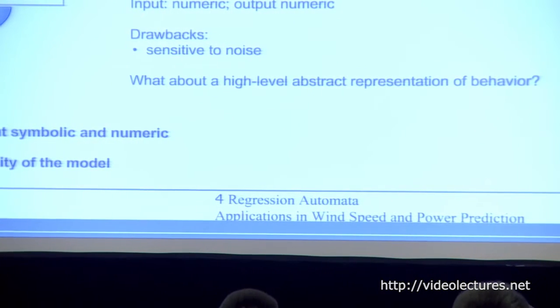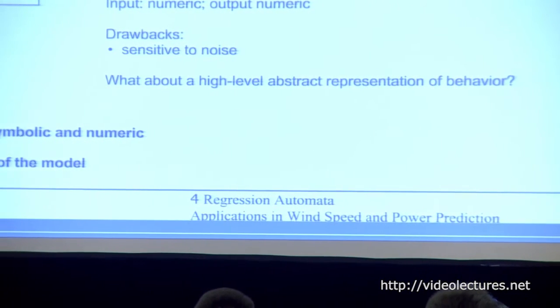Traditional syntactic models take symbolic data as input and output symbolic data. Through discretization, numerical data is transformed into symbolic data. One drawback is that predictions are symbols rather than actual values. Additionally, conventional time series models are sensitive to noise and it's hard to get a high-level abstraction of the model.